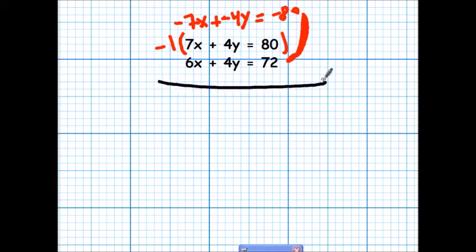So I'm going to add those two equations. Negative 7x plus 6x equals negative 1x. Negative 4y plus positive 4y cancels. Here's my equal sign. Negative 80 plus 72 equals a negative 8. Well, if the opposite of x equals negative 8, if I multiply by negative 1, I will get that x equals 8. One of my two solutions.